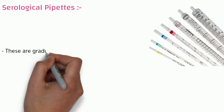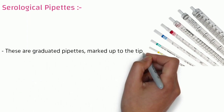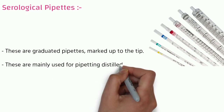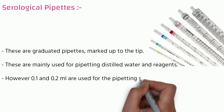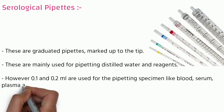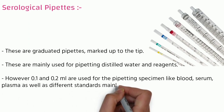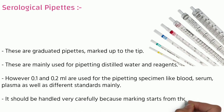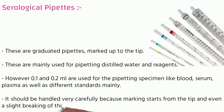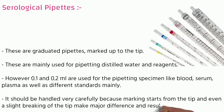Serological pipettes — you can see these in this picture. These are graduated pipettes marked up to the tip. They are mainly used for pipetting distilled water and reagent only. However, 0.1 to 0.2 ml serological pipettes are used for pipetting specimens like blood, serum, and plasma, as well as different standards. They should be handled very carefully because markings start from the tip, and even a slight breaking of the tip makes a major difference and results may be affected.